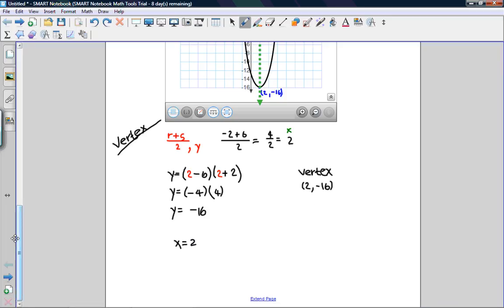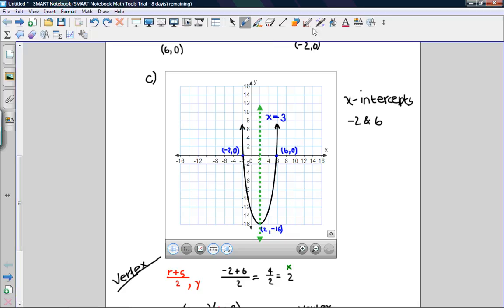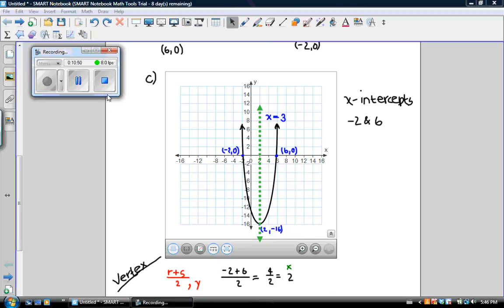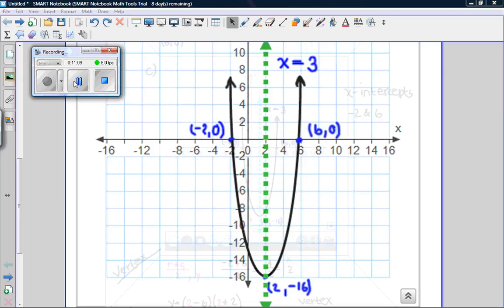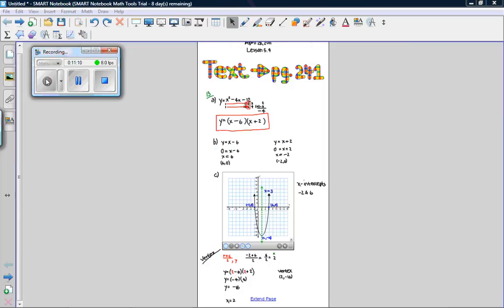When you draft, this is how it will look. These are the x-intercepts. The green line is the axis of symmetry. And right here is the vertex at (2, -16).